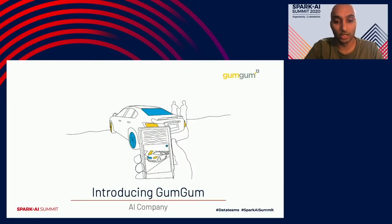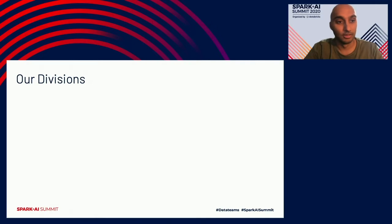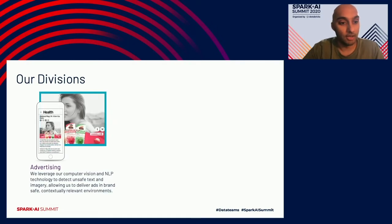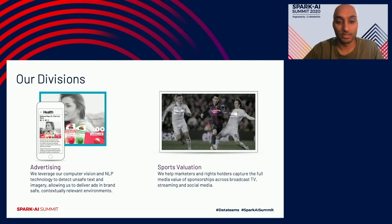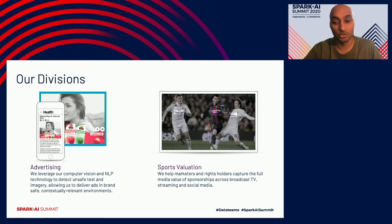Just a quick introduction about GumGum. We are an AI company located in Santa Monica, California. Our divisions include advertising, where we leverage computer vision and NLP technology to detect unsafe text and imagery, allowing us to deliver ads in a brand-safe and contextually relevant environment. Our second vertical is sports valuation, where we help marketers and rights media holders capture the full media value of sponsorship across broadcast TV, streaming, and social media.